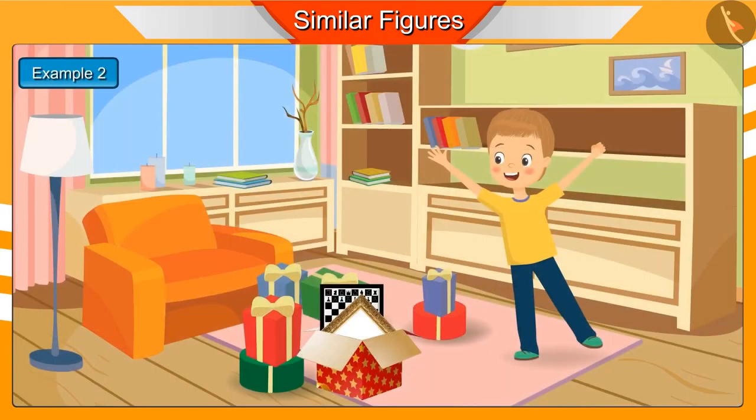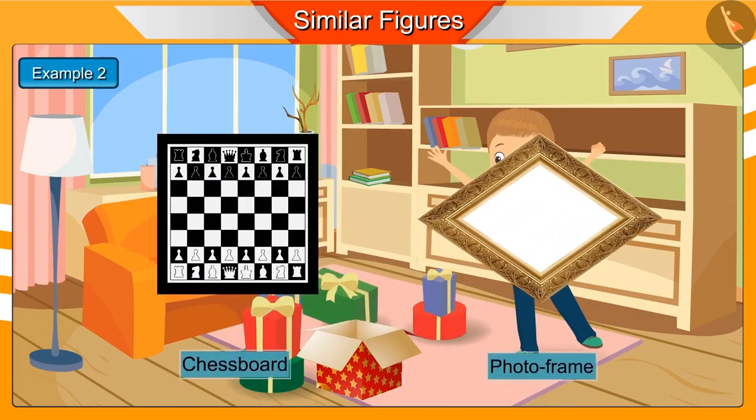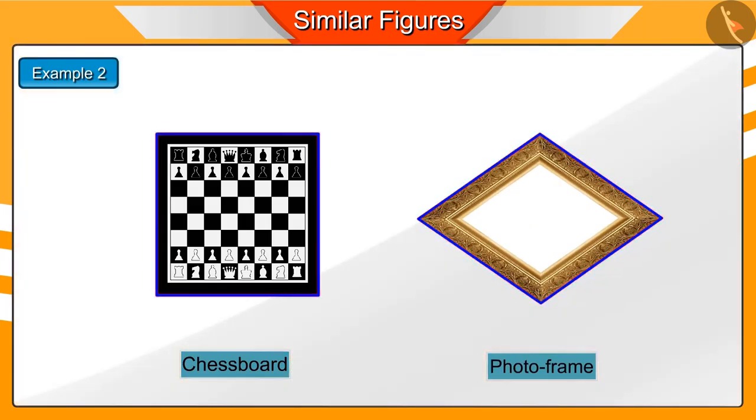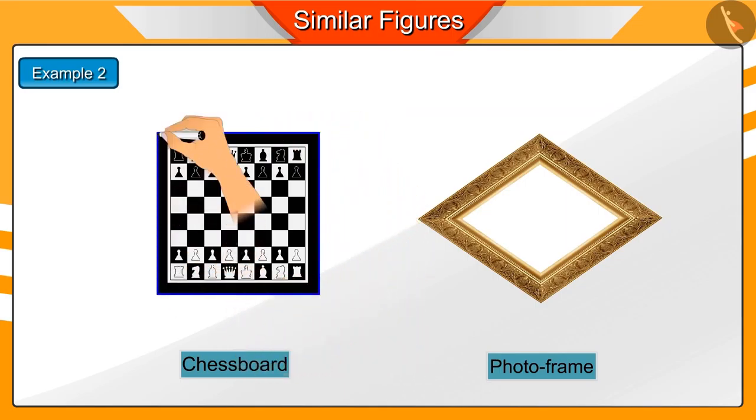Come on, let's look at one more example. Deepak was looking at gifts received on his birthday. In these, he got a chess board and a photo frame. Which figure can you see on the screen? Can you tell whether they are similar or not? He puts them on paper and draws their figure.